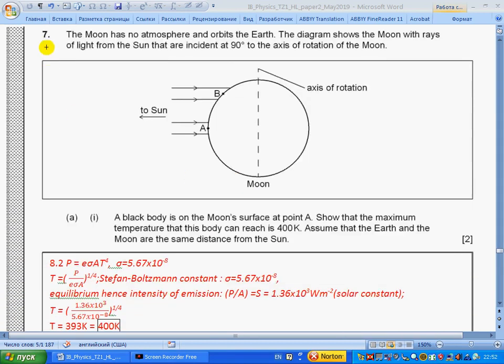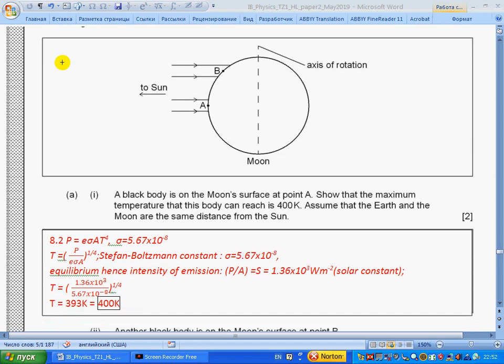Question 7: The moon has no atmosphere and orbits the Earth. The diagram shows the moon with rays of light from the sun that are incident at 90 degrees to the axis of rotation of the moon. Part a-i: A black body is on the moon surface at point A. Show that the maximum temperature that the body can reach is 400 kelvin. Assume that the Earth and the Moon are the same distance from the sun. Section 8.2: power emitted by an object can be calculated if you know its temperature.